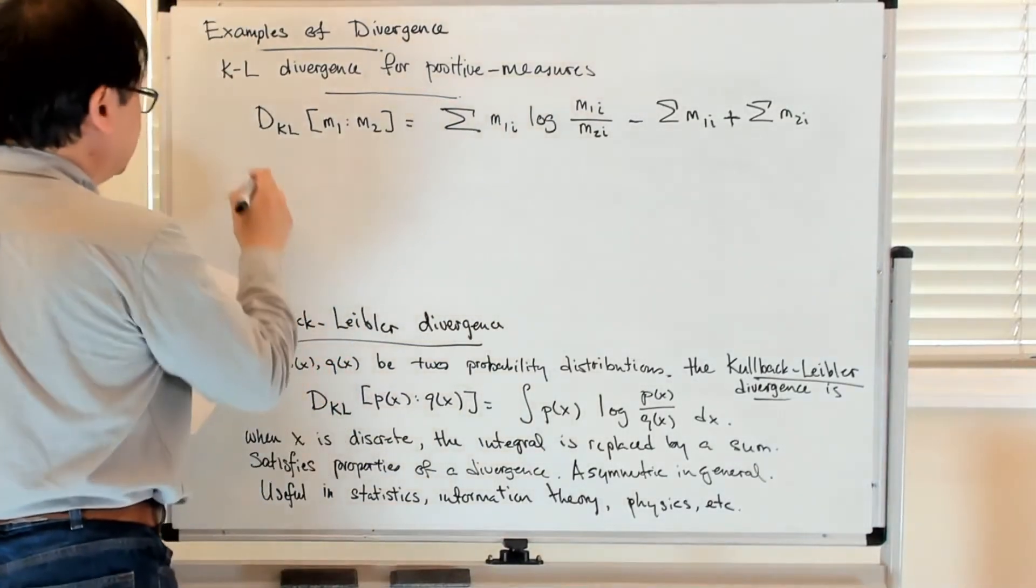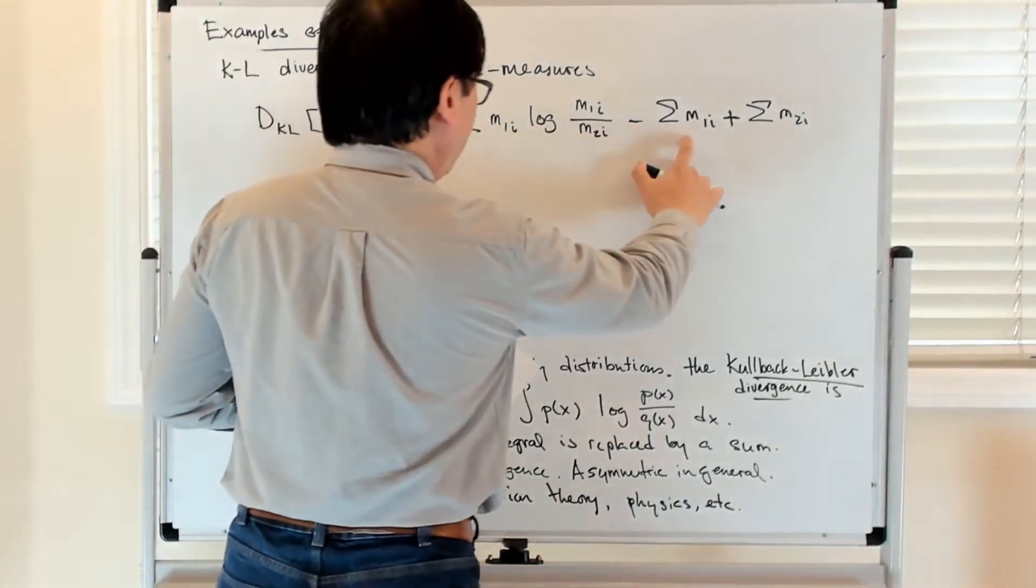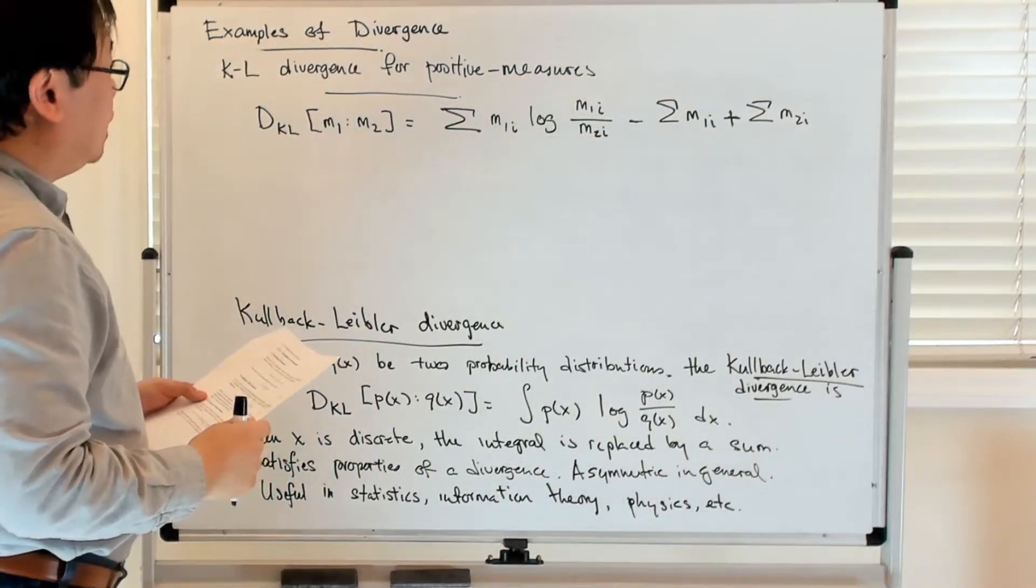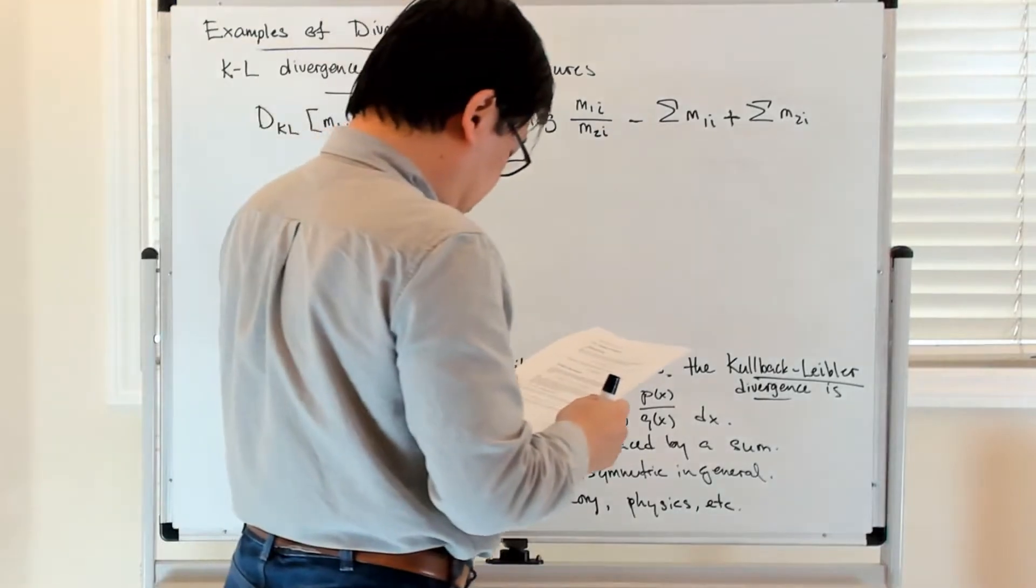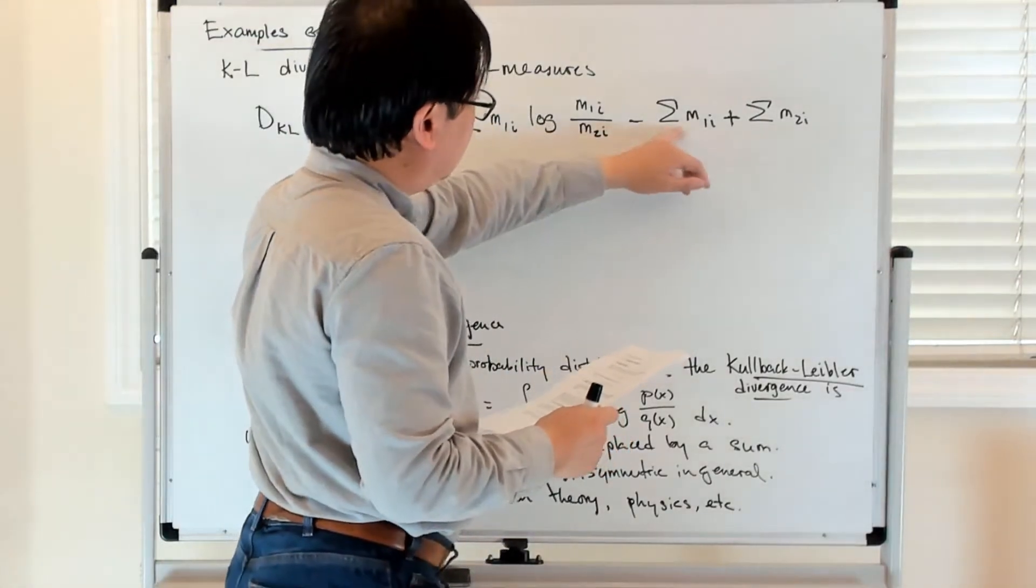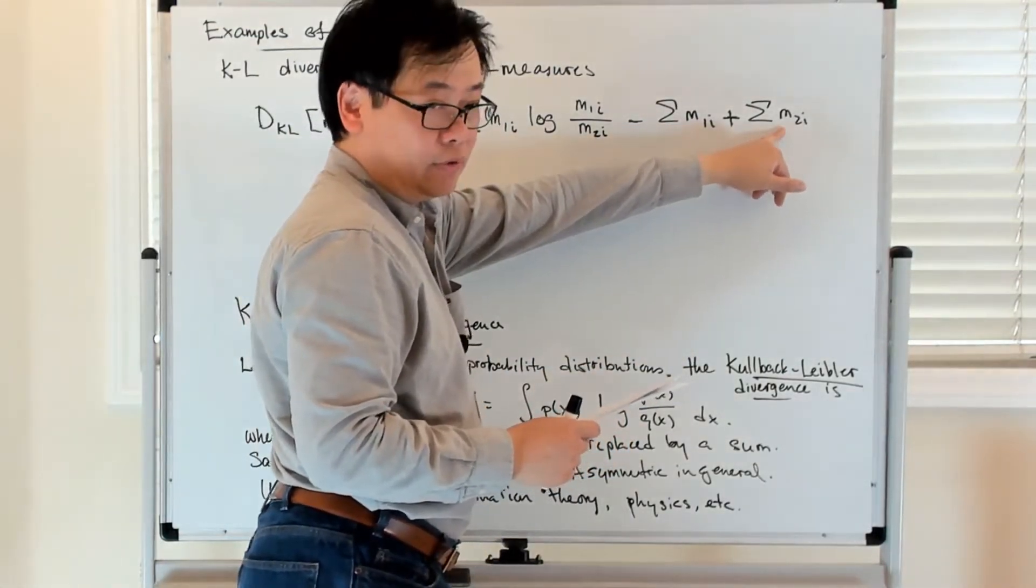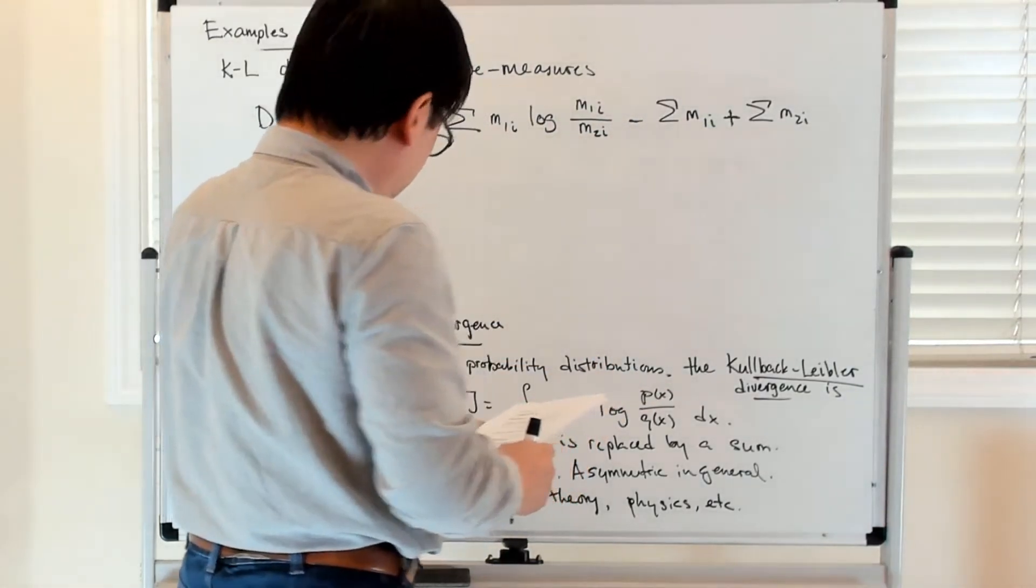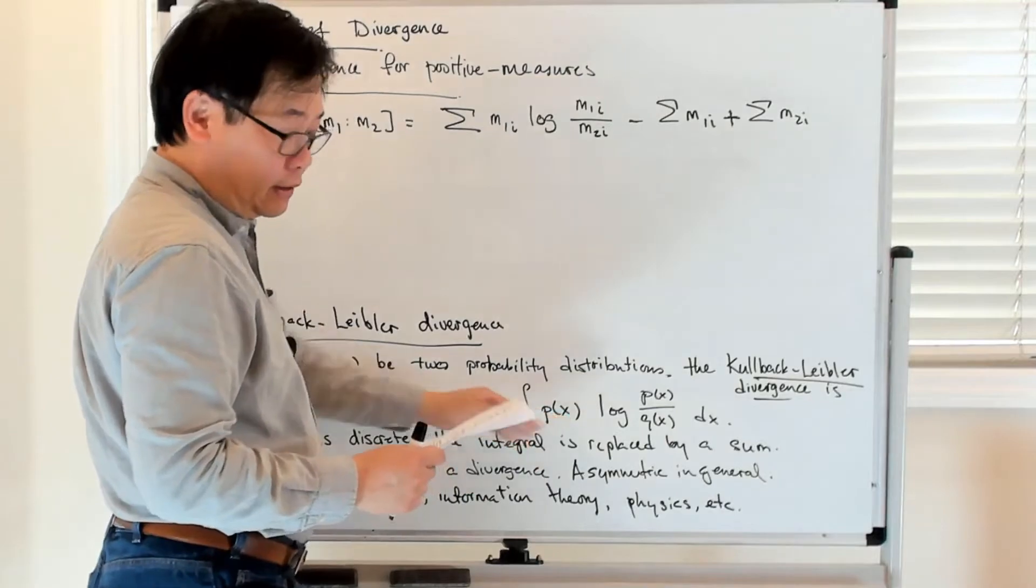So if now m1 and m2 are both probability measures, then these sums will sum up to one individually, and so they will cancel out and reduce to the discrete version of the KL divergence.